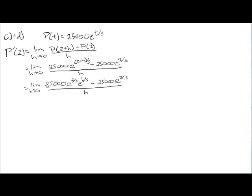Now, the reason we're doing that is if you notice 25,000 e to the 2 fifths is now a common factor. And also, it doesn't depend on h. So, we're going to have the limit as h approaches 0 of 25,000 e to the 2 fifths. We're pulling this out in front. And what does that leave us with is e to the h over 5 minus 1 all over h.